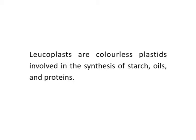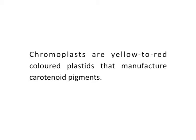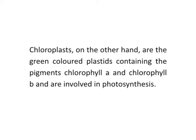The next organelle is the plastids. Plastids are plant cell organelles and are of several different types. Leucoplasts are colorless plastids involved in the synthesis of starch, oils and proteins, while chromoplasts are yellow to red colored plastids that manufacture carotenoid pigments. Chloroplasts, on the other hand, are the green colored plastids containing the pigments chlorophyll A and chlorophyll B and are involved in photosynthesis.